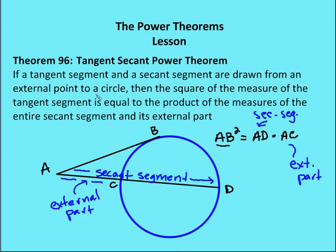We also have the tangent-secant power theorem, which says that the tangent segment squared is equal to the entire secant segment AD times its external part AC. So AB squared, the tangent squared, equals the secant segment AD times AC. Both the secant and the tangent have to originate from the same point.